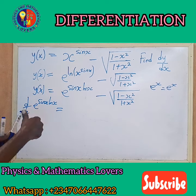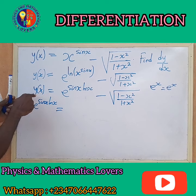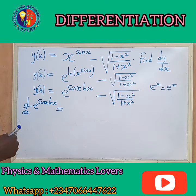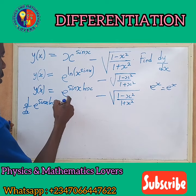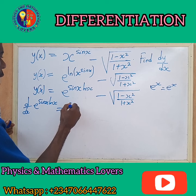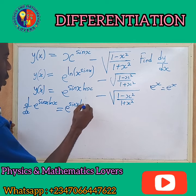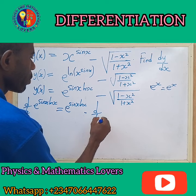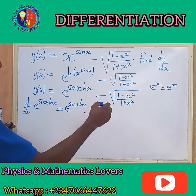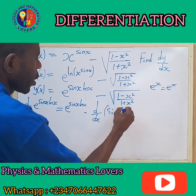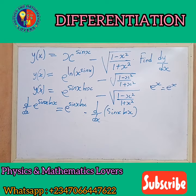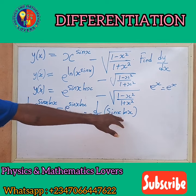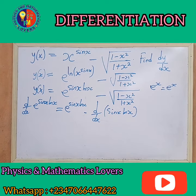Applying chain rule: we let u equal to sin(x)·ln(x). Differentiating with respect to u gives e^u, and we multiply by the differential of u. So at the end of the day, this multiplies everything. Now let us differentiate the product sin(x)·ln(x) using the product rule. The product rule says: keep the first one constant, differentiate the second, multiply together; then plus — keep the second constant, differentiate the first, multiply together.